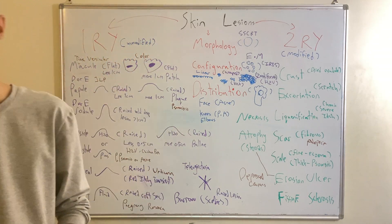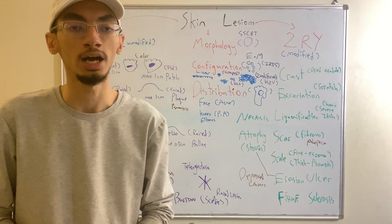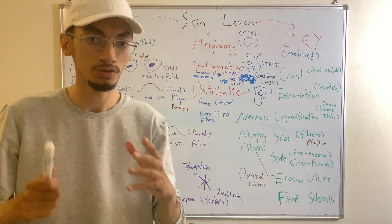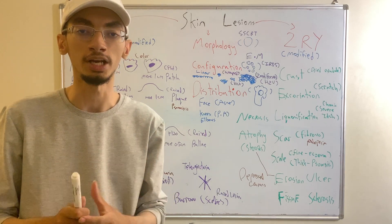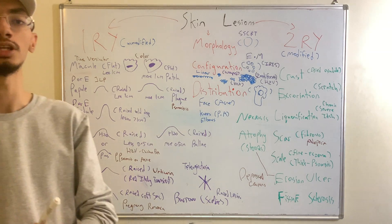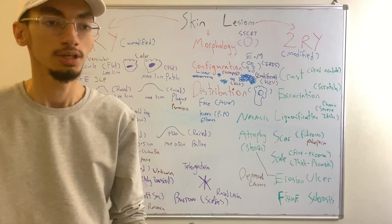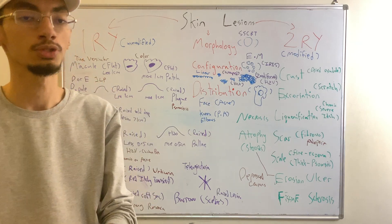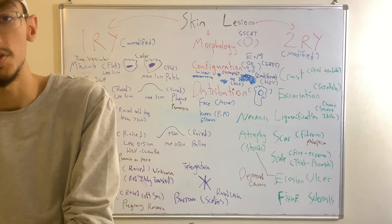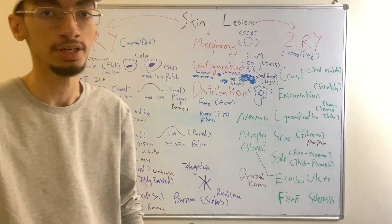To summarize, when you describe a skin lesion, be systematic: describe the morphology using SSCBT, then include the configuration, and finally the distribution — the location on the body. This is important even for non-dermatologists, because skin lesions can be part of systemic diseases — for example, patients with Crohn's disease may have erythema nodosum.